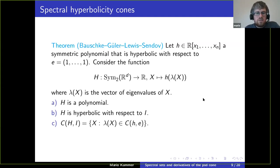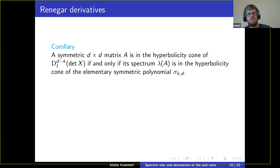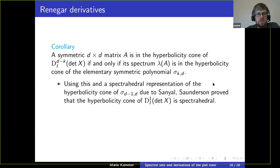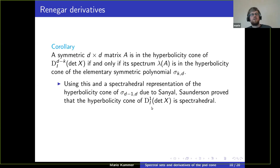We can apply this to our situation. Recall that we are interested in the hyperbolicity cones of these derivatives. By our previous observation, this hyperbolicity cone consists of exactly those matrices whose spectrum is in the hyperbolicity cone of the corresponding elementary symmetric polynomial. Using this observation and a determinantal representation due to Ramana-Sagnol of the elementary symmetric polynomial of degree d-minus-one in d variables, James Saunderson could prove that the first derivative of this determinant polynomial is spectrahedral.